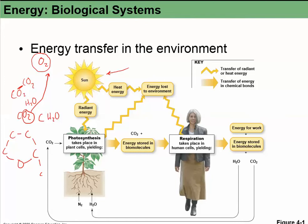Photosynthesis releases oxygen, and then we eat these carbohydrates and reverse the process. We take oxygen from the air and break these things down. The bonds contain energy that came from the sun. We use oxygen to break those bonds, release that energy, and spit out CO2. That's this cycle that keeps us alive.